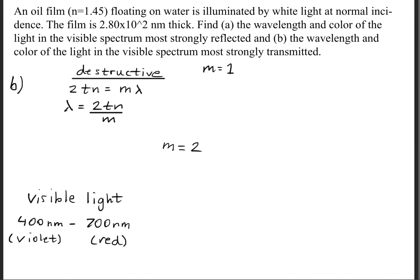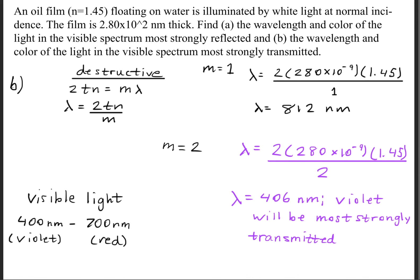We'll evaluate when our integer is one, and this gives us 812 nanometers. That doesn't quite fit the criteria we're looking at. But what if we use m equals two? This gives us a wavelength of 406 nanometers. This works, so violet will be most strongly transmitted.